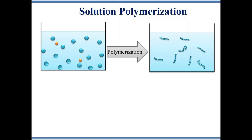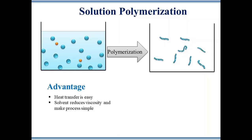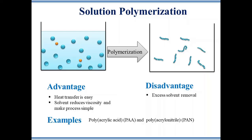To obtain pure polymer, excess solvent has to be removed. Hence, solution polymerization is mainly used for applications where the presence of a solvent is desired, for example varnish and adhesives. It is not useful for the production of dry polymers because of the difficulty of complete solvent removal. The advantage of this method is that heat transfer is easy due to the presence of solvent, which also helps in reducing viscosity, making the process very simple. The disadvantage is the process of removal of excess solvent. Polymers such as polyacrylic acid and polyacrylonitrile are synthesized using solution polymerization.